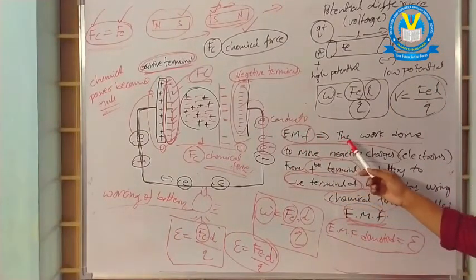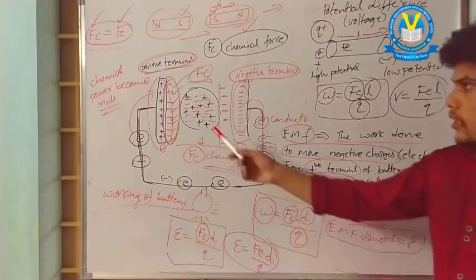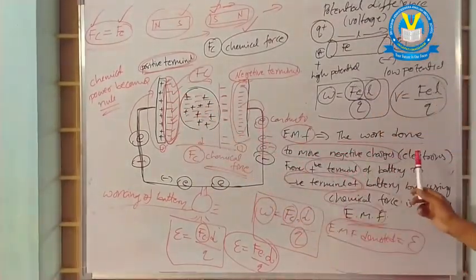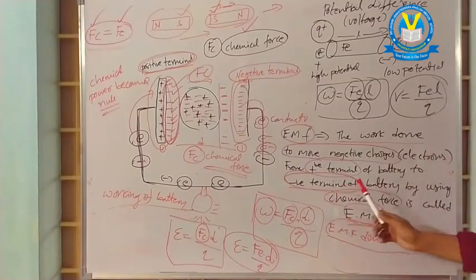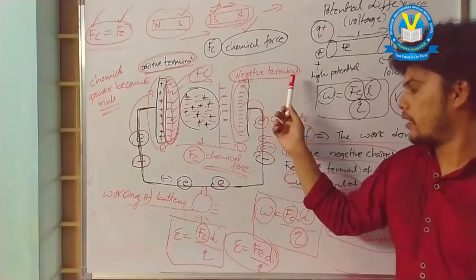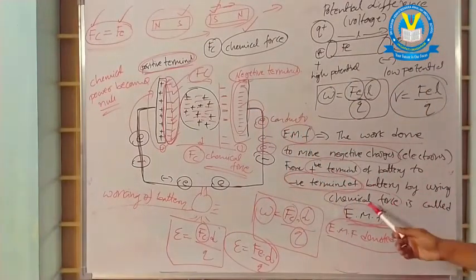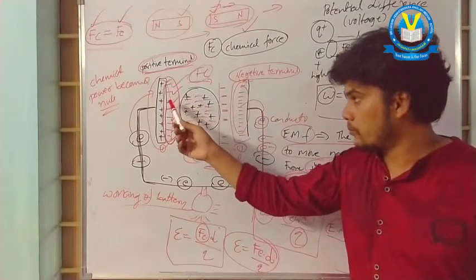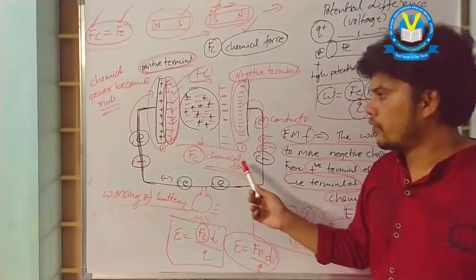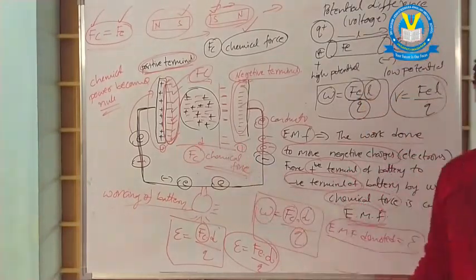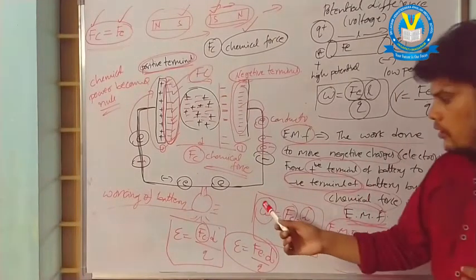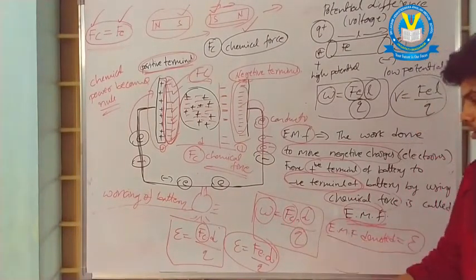Electromotive force means the work done to move a negative charge — shown here in red — from the positive terminal of the battery to the negative terminal of the battery. By applying chemical force, the charge moves distance D. Some work is done here, and that work is W = Fc × D / Q.